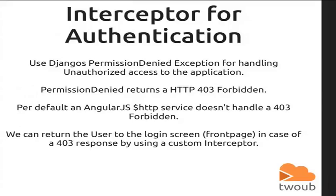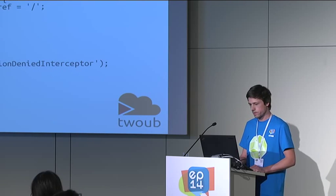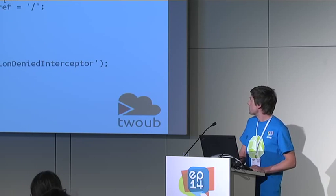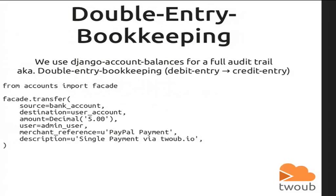We have a lot of requests depending on user permissions, so we have to handle a permission denied exception delivered by Django. But a standard HTTP service in AngularJS doesn't handle a 403, so you have to create a custom interceptor. We have a factory: permission denied interceptor. You can handle a request, request error, response, and response error. In this case it's a response error — 403 — so we set the location to a slash, which is the front page and the registration/login page.